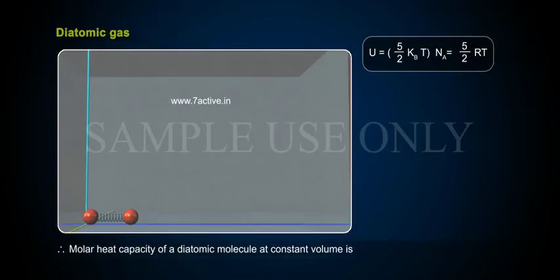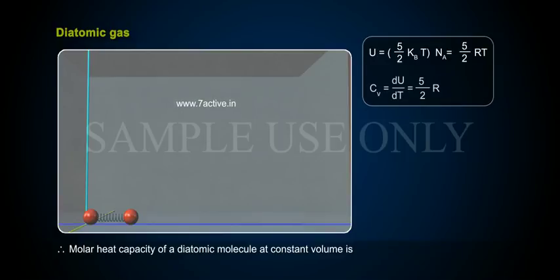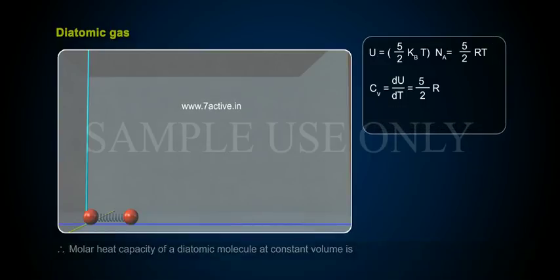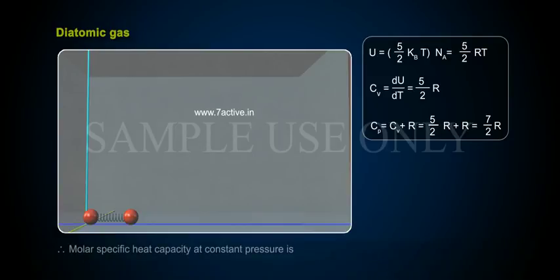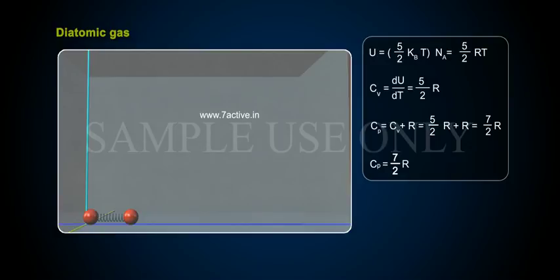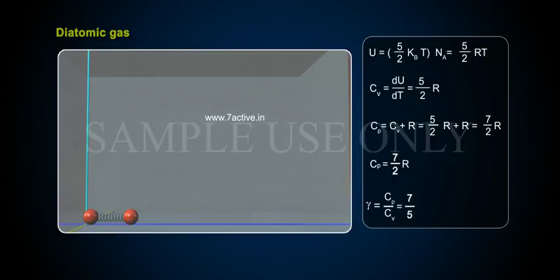Therefore, the molar heat capacity of a diatomic molecule at constant volume is Cv = 5/2 R, and Cp = Cv + R = 7/2 R. The ratio of specific heats is γ = Cp/Cv = 7/5.